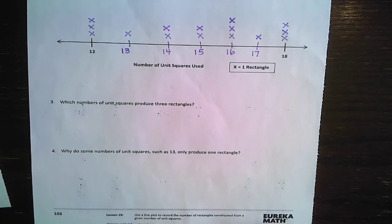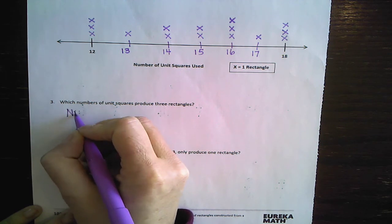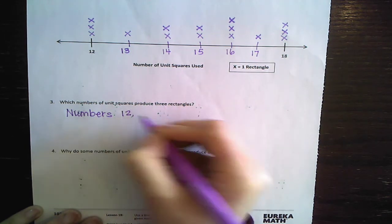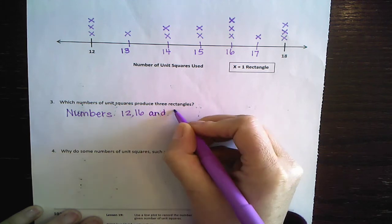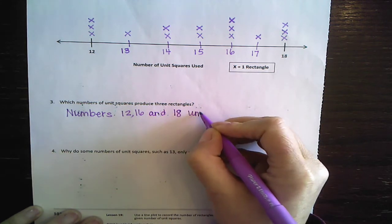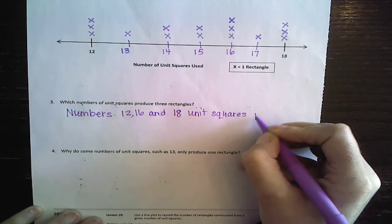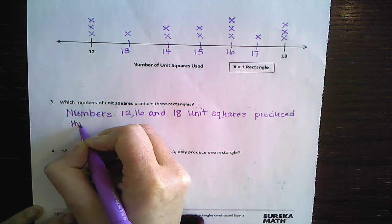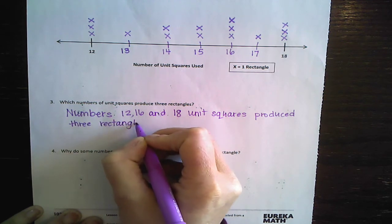Okay. Let's read number three together. Which numbers of unit squares produce three rectangles. So I'm going to write numbers, let's see, 12, 16, and 18 unit squares produced. That's the word they use. So that's the word I'm going to use. Produced three rectangles.